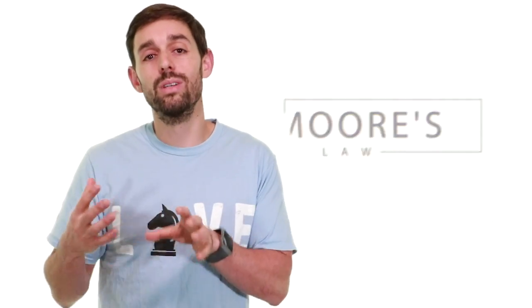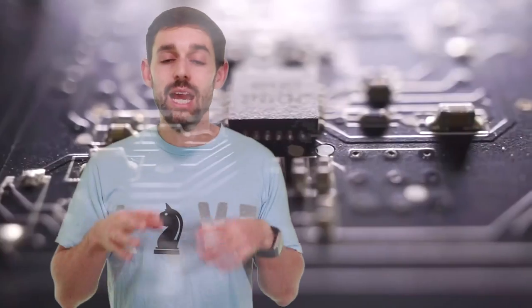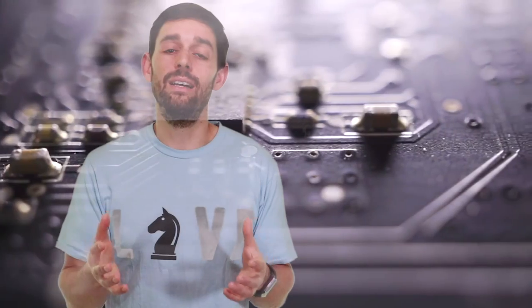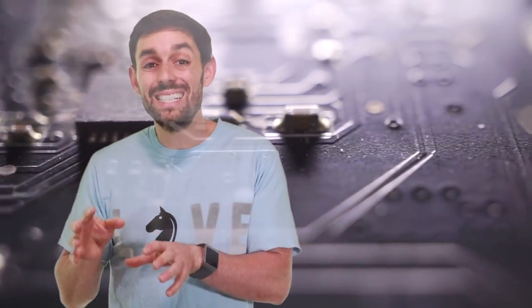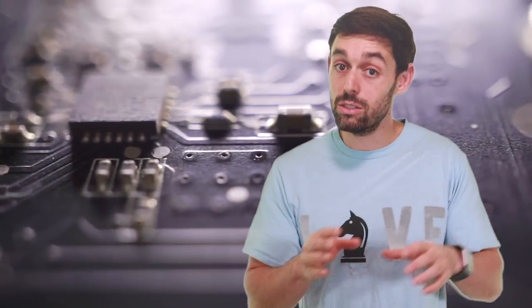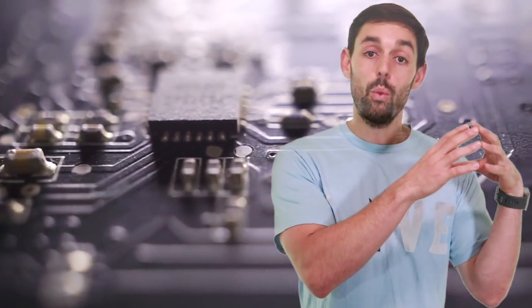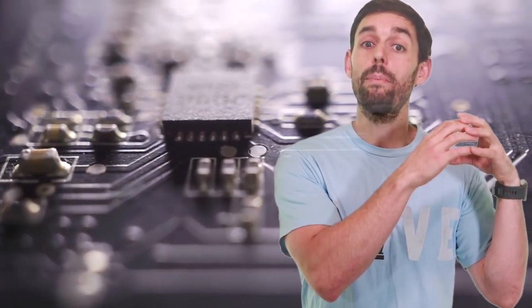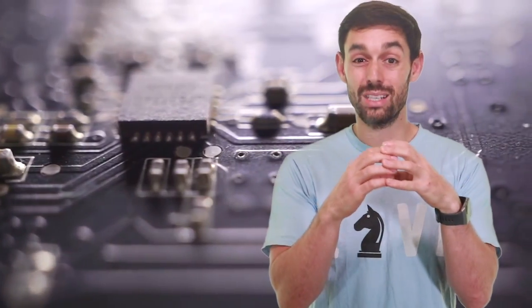And of course, we have Moore's Law, which kind of fits into all of this as well. And Moore's Law is essentially this idea that we can fit more transistors onto a microprocessor. And because we can fit more transistors onto a microprocessor, we can essentially make those microprocessors more powerful. We can make those microprocessors smaller. We can use more of those microprocessors in our devices.